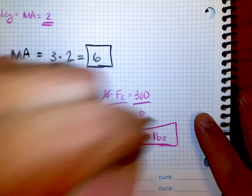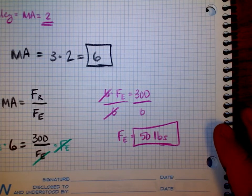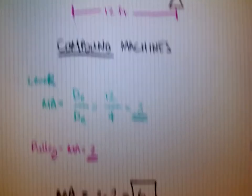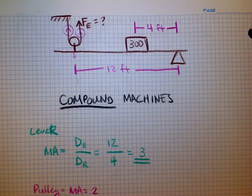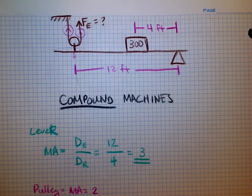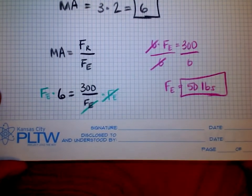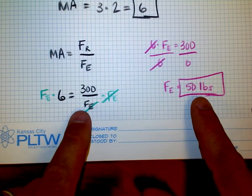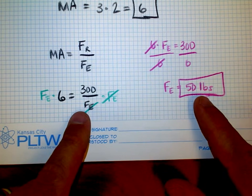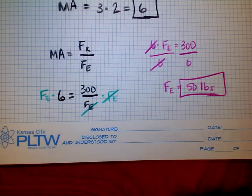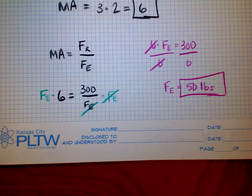So hopefully that makes sense. What do I do if I have multiple machines? You multiply the mechanical advantages together to get the overall mechanical advantage. You use the overall mechanical advantage in order to figure out the effort forces or the distances or whatever you're talking about. In the next video we'll talk about a compound machine that involves multiple pulleys.